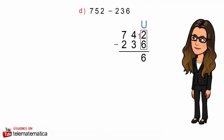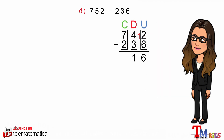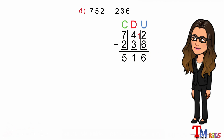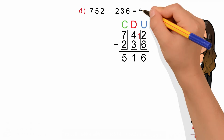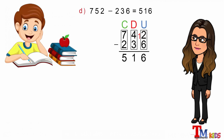En tercer lugar, identificar la columna de las decenas y restar: 4 menos 3 es igual a 1. Y por último, identificar la columna de las centenas y restar: 7 menos 2 es igual a 5. Y este resultado lo escribimos en la operación de 752 menos 236.